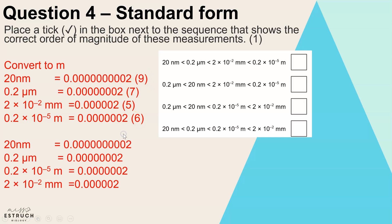Now from that I can straight away see the order of magnitude. It's almost in the correct order there already. I just need to swap those two around. So the correct order would be 20 nanometers, 0.2 micrometers, 0.2 times 10 to the minus 5 meters, 2 times 10 to the minus 2 millimeters, and that is actually our final row just here.